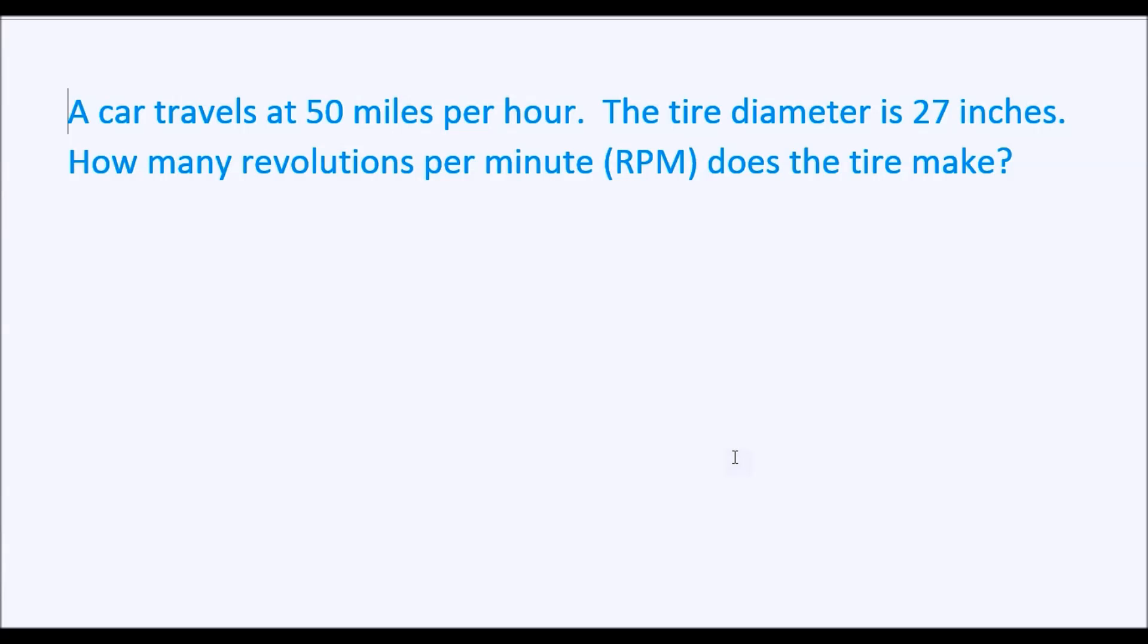Okay, so we're really converting miles per hour to revolutions per minute or RPM. All right, so let's begin by converting the miles to inches because the diameter of the tire is 27 inches. And we're going to need to have the distance traveled in inches.